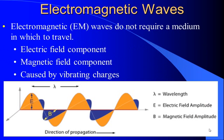Electromagnetic waves are waves that do not require a medium in which to travel. They can travel through a vacuum. Electromagnetic or EM waves have an electric field component and a magnetic field component, and the electric field is perpendicular to the magnetic field.